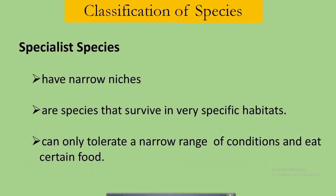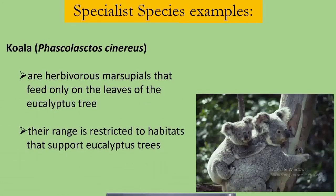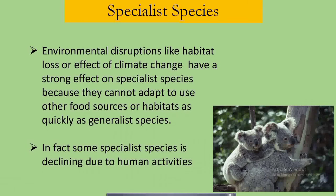Specialist species, on the other hand, have narrow niches. They are species that survive in very specific habitats and can only tolerate a narrow range of conditions and eat certain food, which makes them more prone to becoming endangered when environmental conditions change. One example of a specialist is the koala (Phascolarctos cinereus), a herbivorous marsupial that feeds only on the leaves of the eucalyptus tree. That's why their range is restricted to habitats that support eucalyptus trees. Environmental disruptions like habitat loss or the effects of climate change have a strong effect on specialist species, because they cannot adapt to use other food sources or habitats as quickly as generalist species. In fact, some specialist species are declining due to human activities.